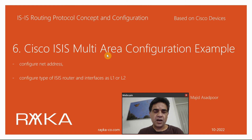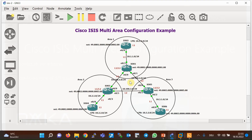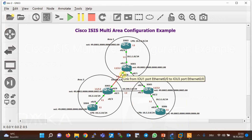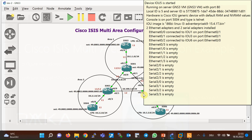We will also see how configuring the NET address and the type of ISIS router and interfaces — whether level one or level two — differs in a multi-area topology. In this topology three areas exist, and all areas are connected to each other directly. Connections between areas are established over the backbone path, which is created by level two routers. As you can see, three areas are connected via routers IOU 1, 3, and 5, which form the backbone path.